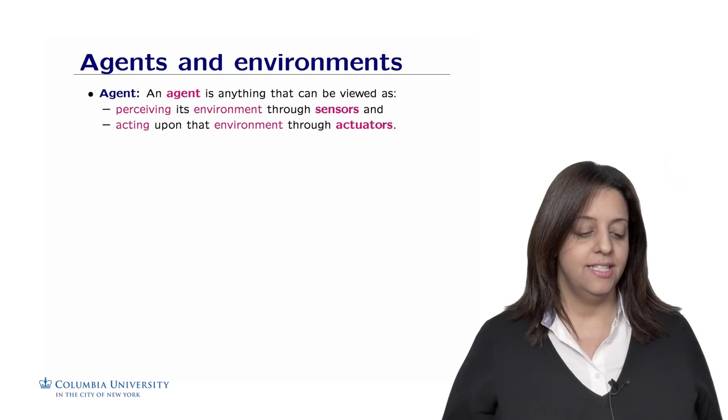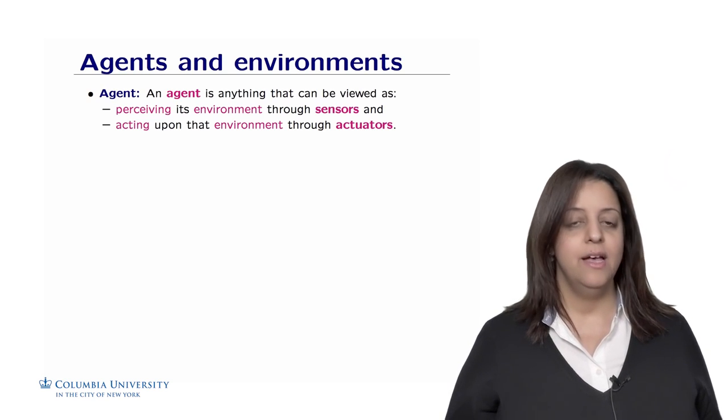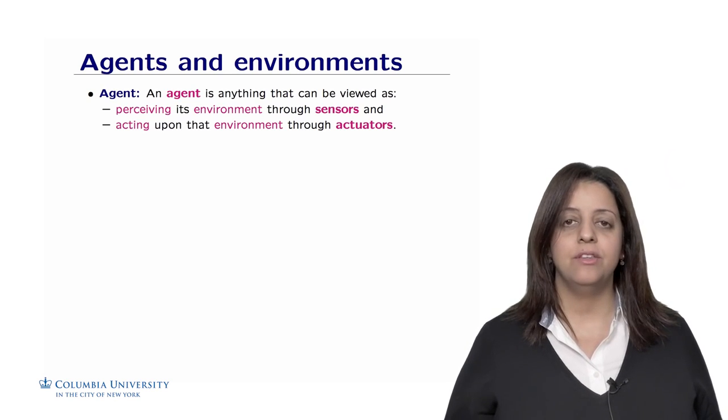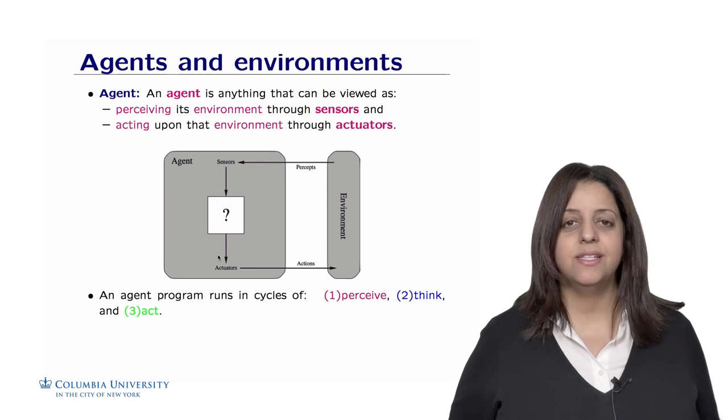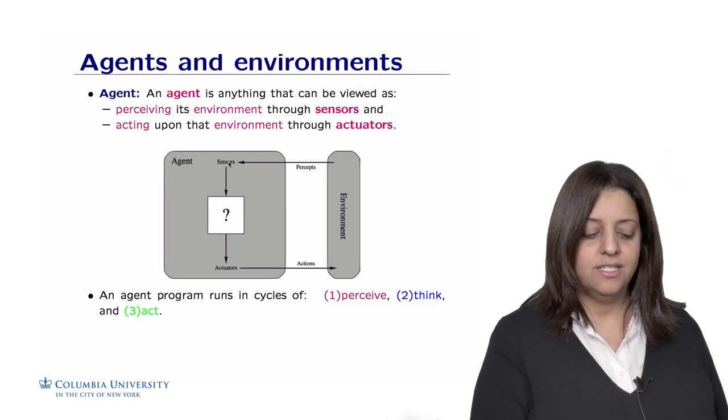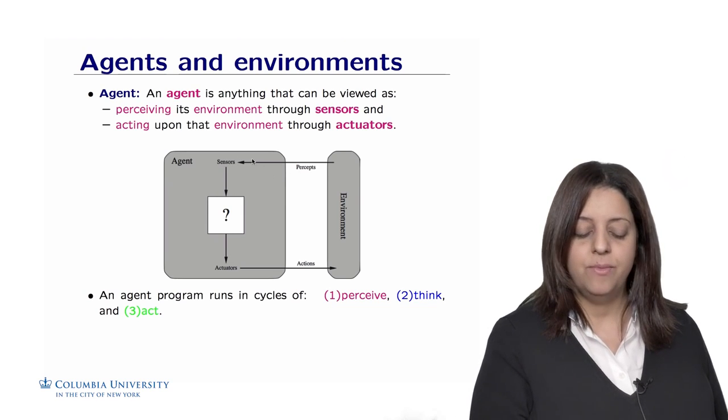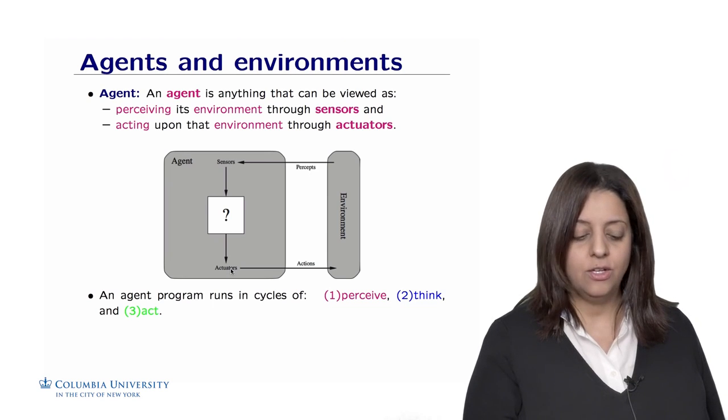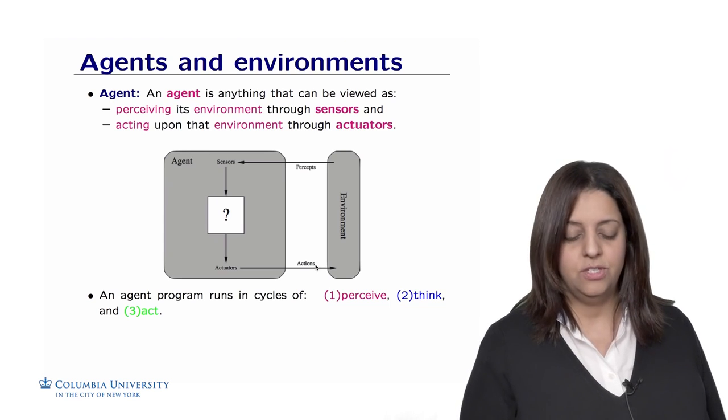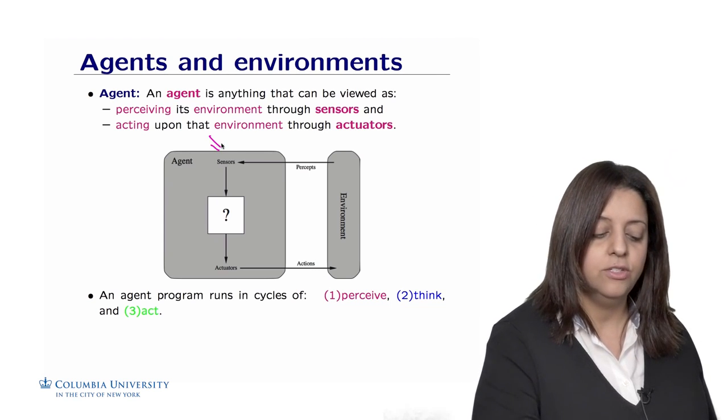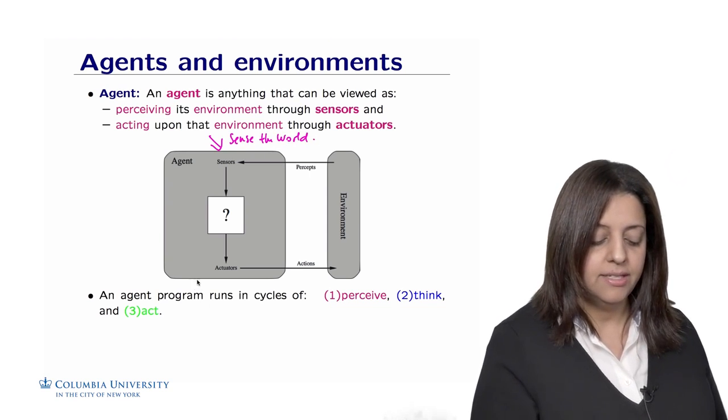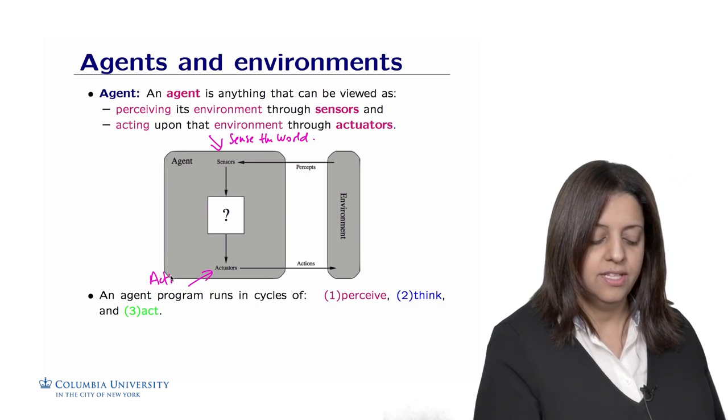Let's define first what's an agent. An agent is anything that can be viewed as perceiving its environment through sensors and acting upon that environment through actuators. An agent can be represented with this diagram in which we have the environment and the agent. The agent box actually has some sensors in it that sense the environment and gets percepts from the environment. And the agent can have actuators that actually act upon that environment, thus generating actions. So the first part here allows the agent to sense the world in which it evolves, and the second part is about acting upon that world.